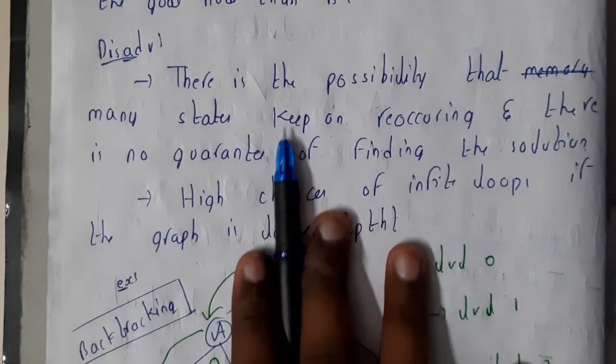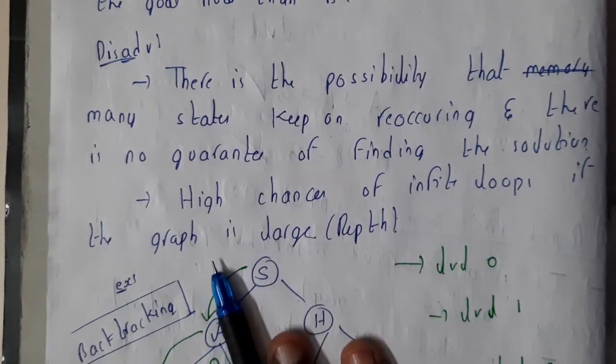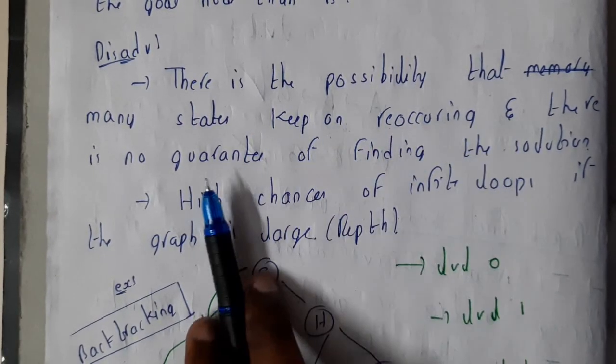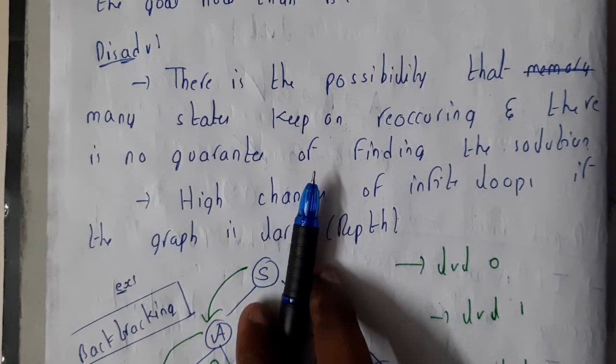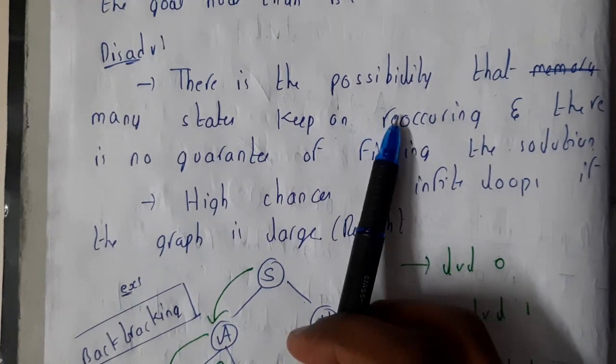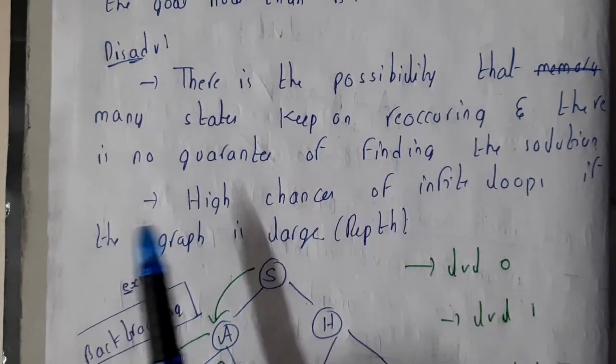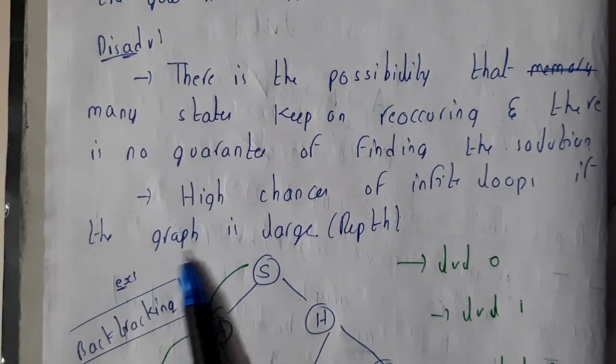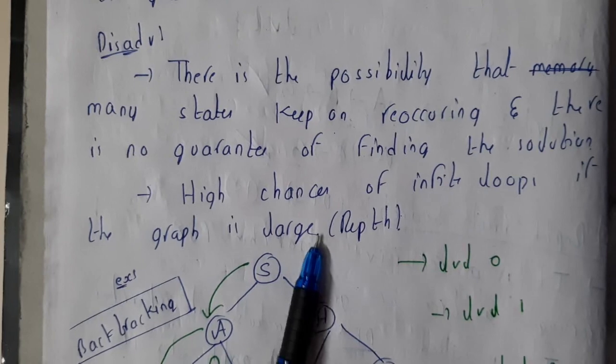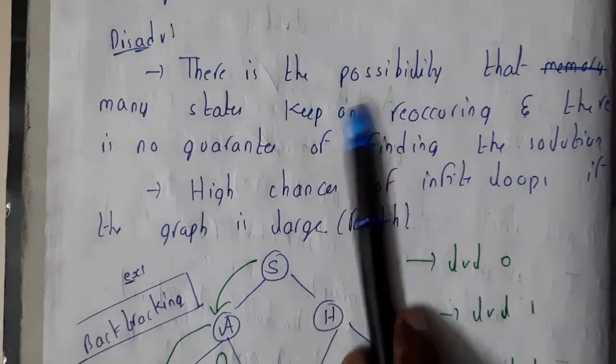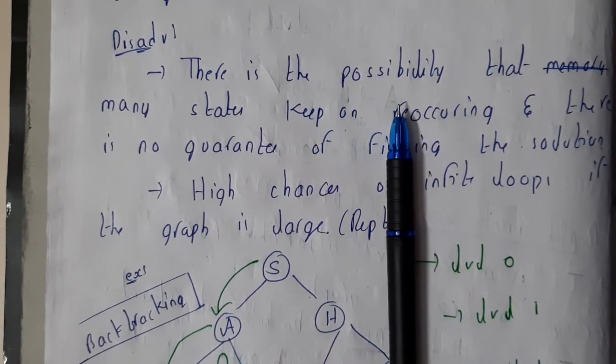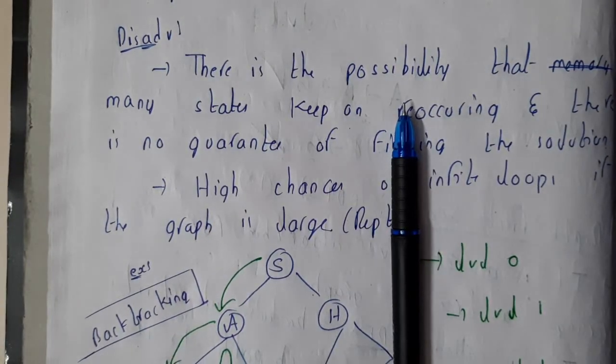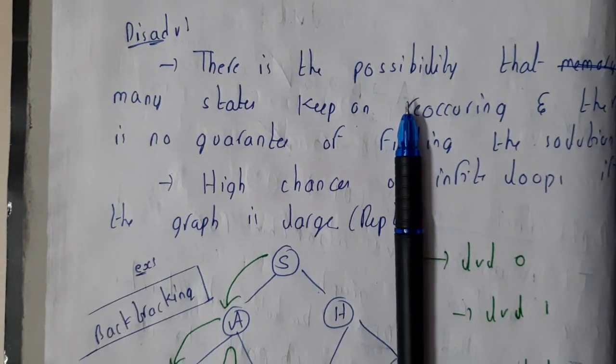The disadvantage is that there is the possibility that many states keep recurring, and there is no guarantee of finding the solution. If there is a huge depth or many repeating things, it will be a huge confusion. High chance of infinite loops when the graphs are really large in depth. If the depth or levels are a thousand, is it easy to use Depth First Search? Because it goes a thousand levels below and then starts moving up and again down, that will be a huge issue.